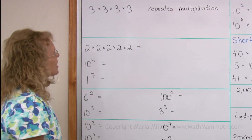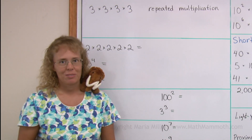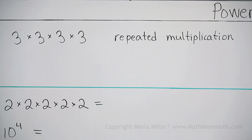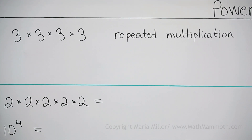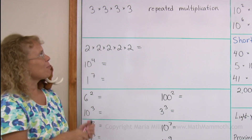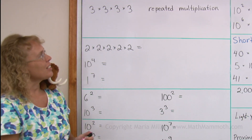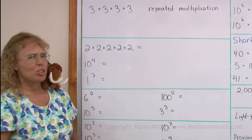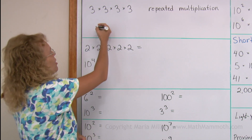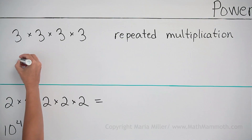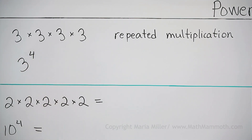This has to do with repeated multiplication. For example, 3 times 3 times 3 times 3 — the multiplication is repeated. We have a shorthand notation for this; it is quicker to write this way: 3 to the fourth power.